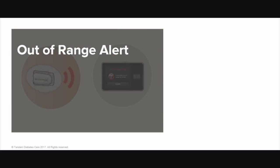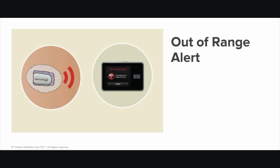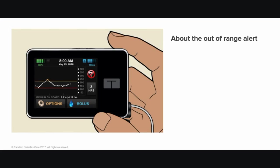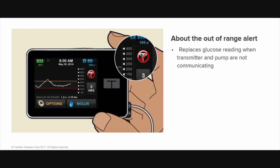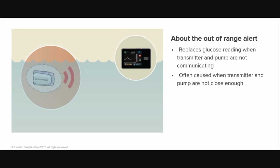Out of Range Alert. If the transmitter and the T-SLIM pump are not communicating, CGM readings will not be sent from the sensor to the pump. This means sensor glucose readings and trend information will be missing during this time, and sensor glucose readings that would trigger high and low alerts and rise and fall alerts may be missed. If the transmitter and the pump are not communicating, you will see an Out of Range symbol on the CGM home screen instead of a glucose reading. Often this occurs because the transmitter and pump are not close enough to be within communication range — for example, if you take your pump off to go swimming and leave the pump outside the pool.